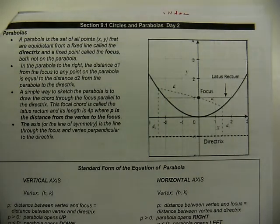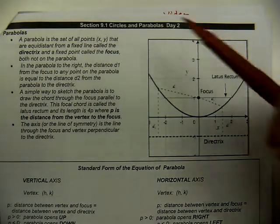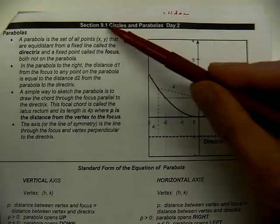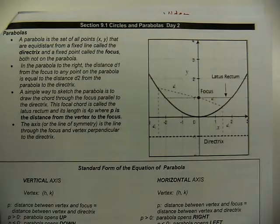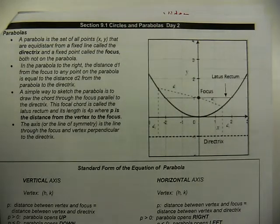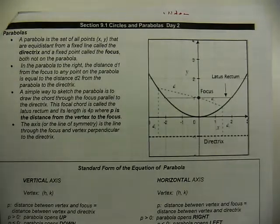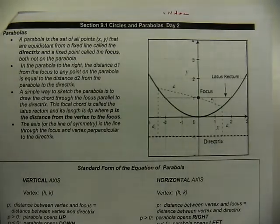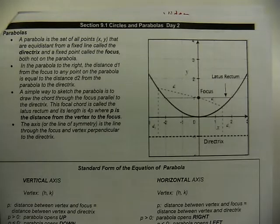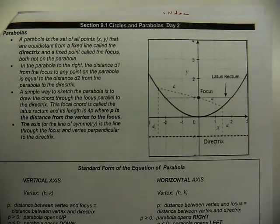Today we're starting off looking at parabolas in section one, not through the perspective of graphing by transformations — we've done that in a previous chapter. Here we're looking at it through the perspective of a conic section, so there's a little bit of new vocabulary and a new process to go through.